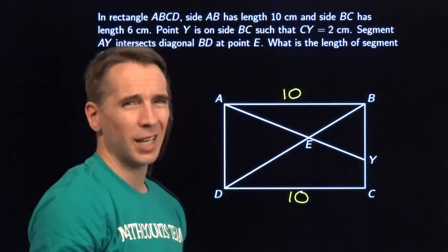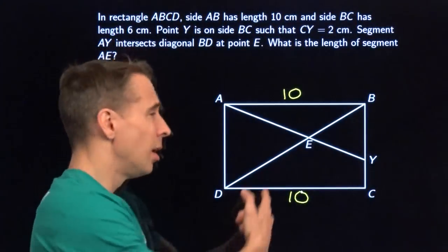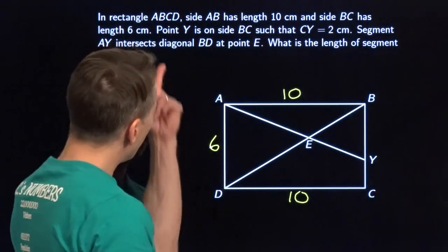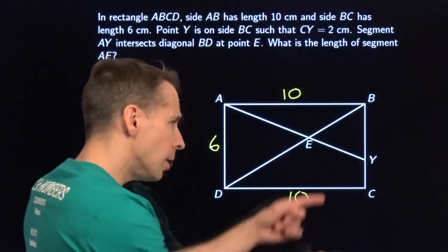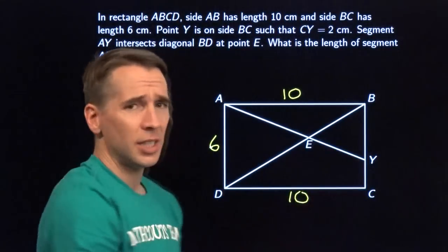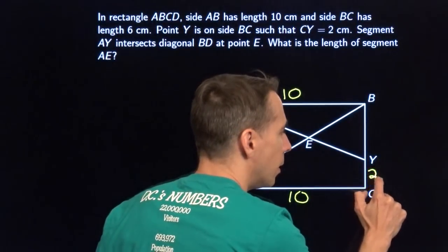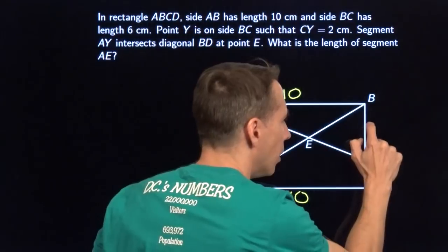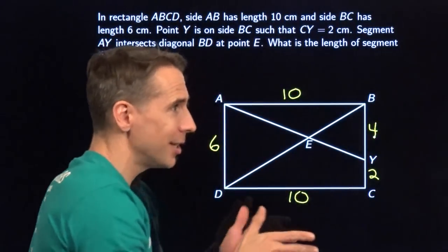Now one thing Harv has taught me is you gotta label your diagram so you can see things. This is 10 up here. And the opposite side, it's a rectangle. This is 10 down here. And then side BC is 6. It's kinda split up over there. That tells me this side over here is also 6. And then point Y over here is on BC such that CY is 2. So we can drop a 2 in there. And this whole thing is 6 so that other piece has gotta be 4.